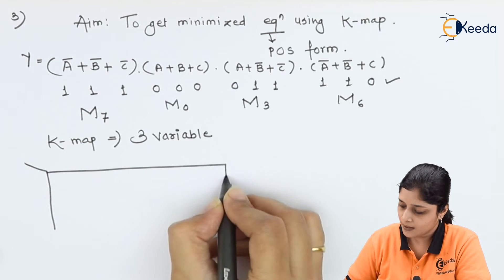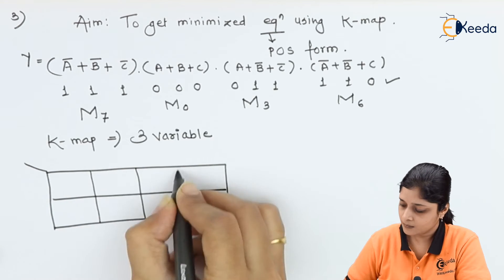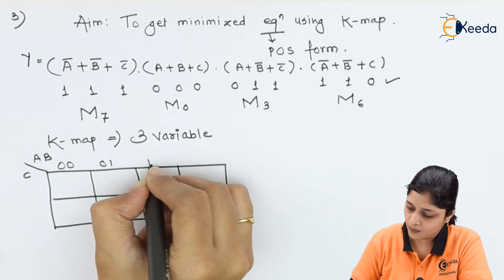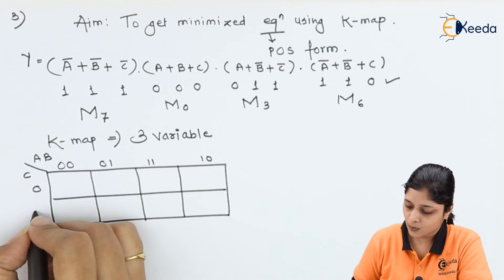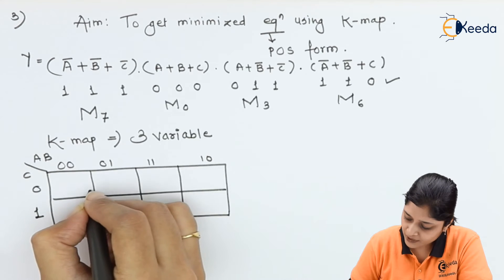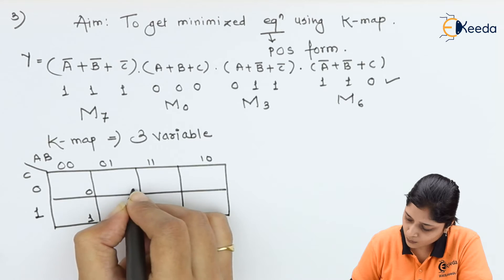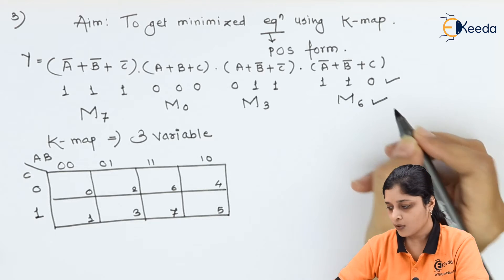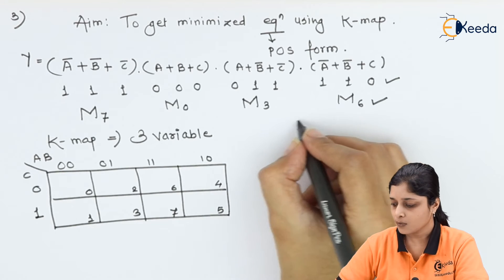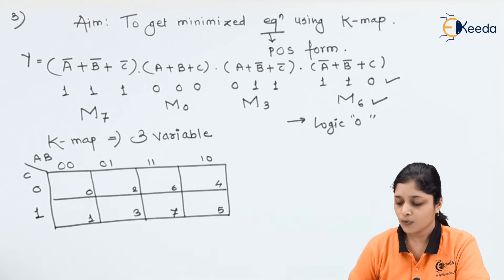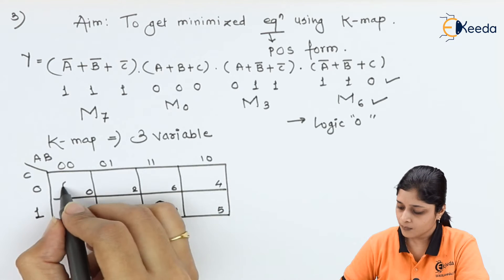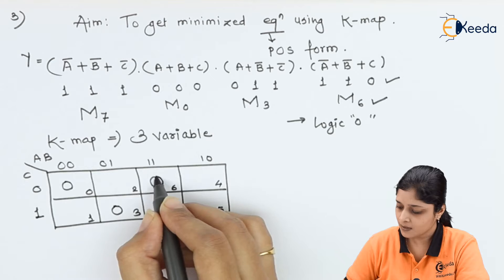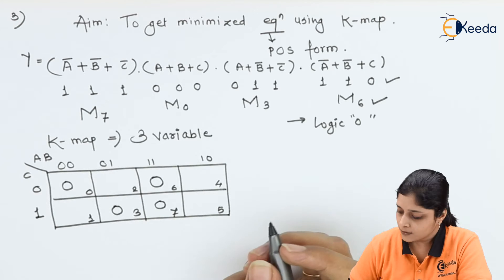Draw the three-variable K-map with A, B, and C. Write 00, 01, 11, 10 along the top and 0, 1 on the side. Inside write 0 through 7. Place logic zero for M7, M0, M3, and M6 in their respective boxes. Grouping now starts.